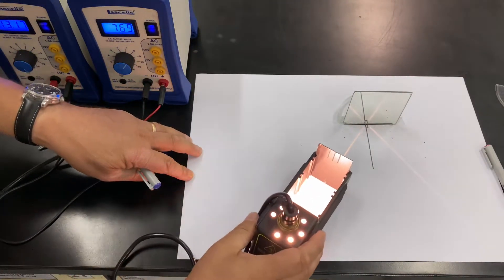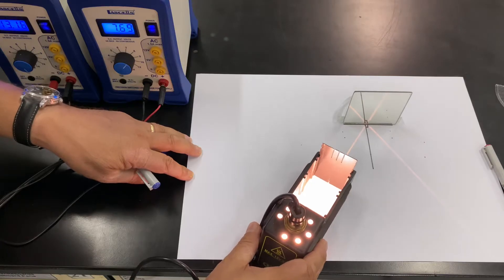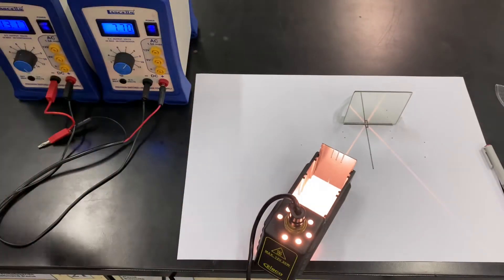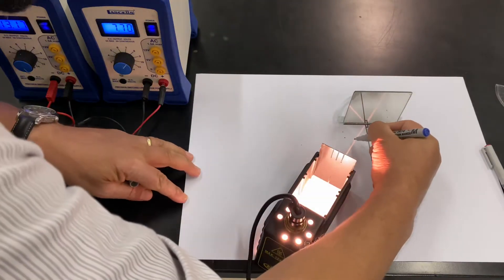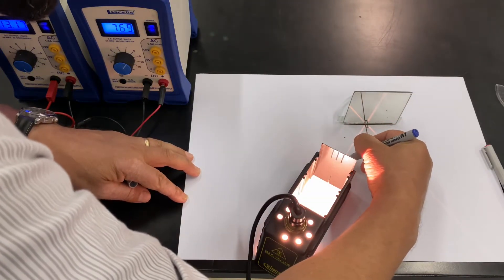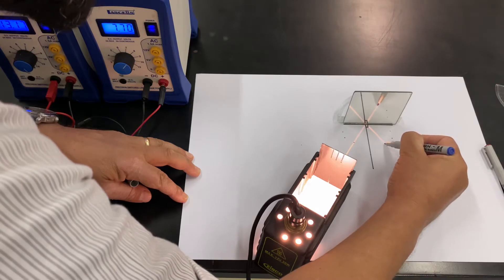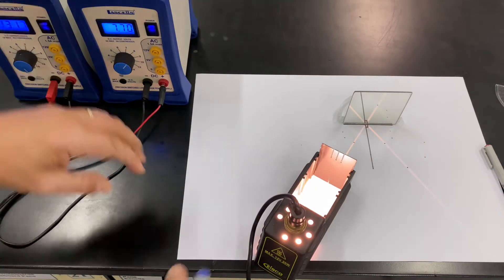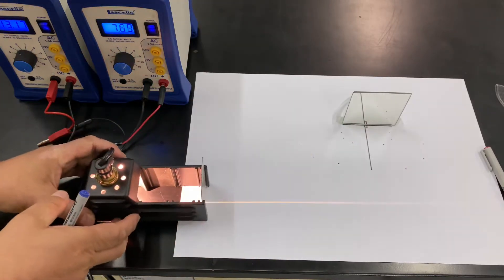Okay. And then let's go for a smaller angle of incidence again. Again, same target where the normal hits the plane of the mirror. So incident ray and reflected ray. Right. We can turn this off.